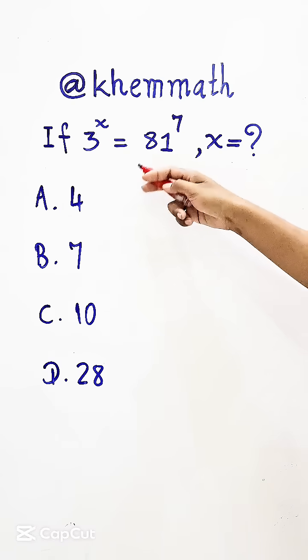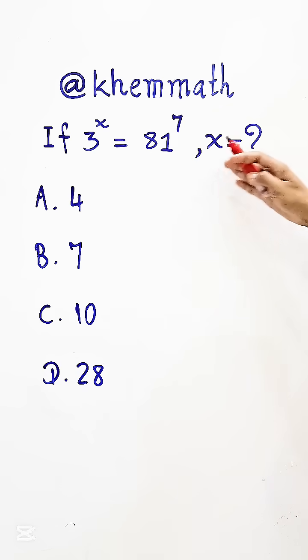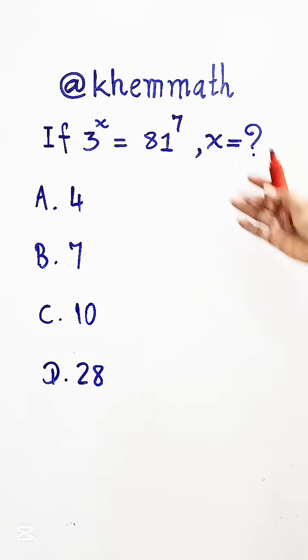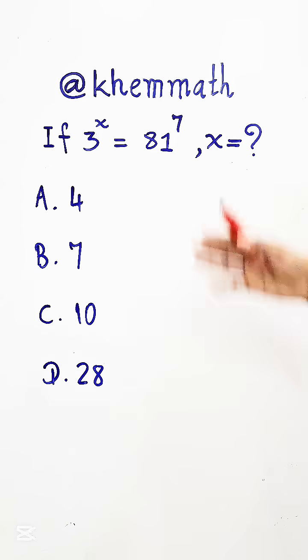If 3^x = 81^7, find the value of x. We have four answer options. Which one is correct?